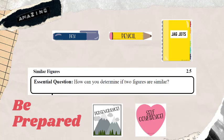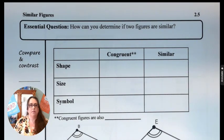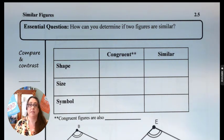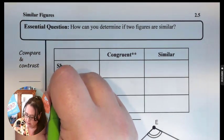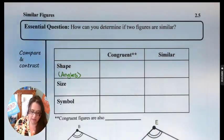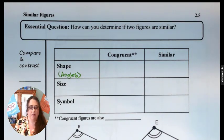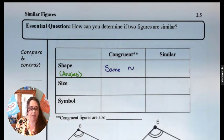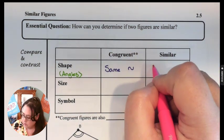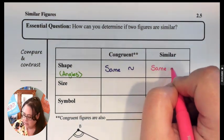In your Jaguar drops on section 2.5, we need to talk about what similar figures are and how similar figures differ from congruent figures. When we look at them, we're looking at their shape and their size. When we talk about shape, we're talking about their angles. In a congruent figure, the angles are exactly the same — we use the tilde symbol to indicate that — and in similar figures, they are also the same.